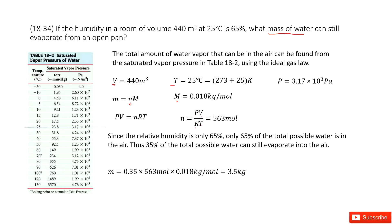So we look at this chart. This is Table 18-2, saturated vapor pressure of water. At 25 degrees Celsius, we can see the corresponding pressure is 3.17 times 10³ Pa.